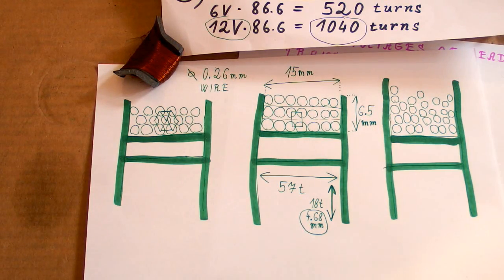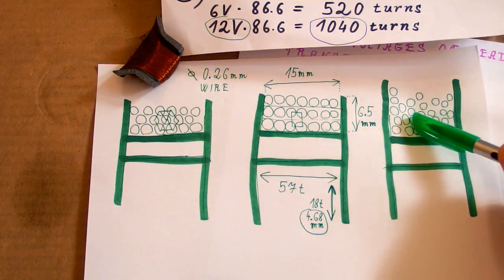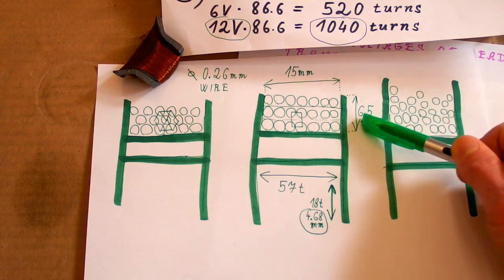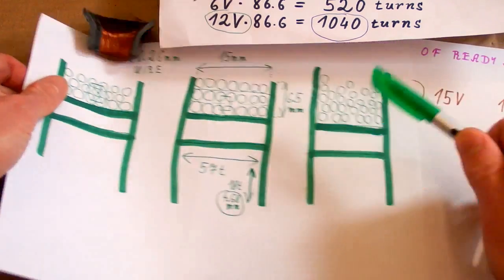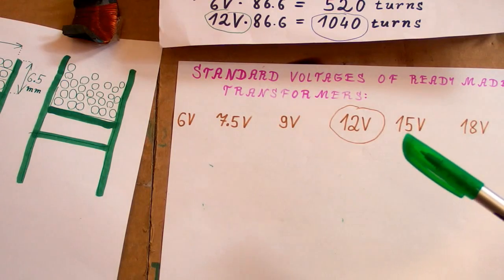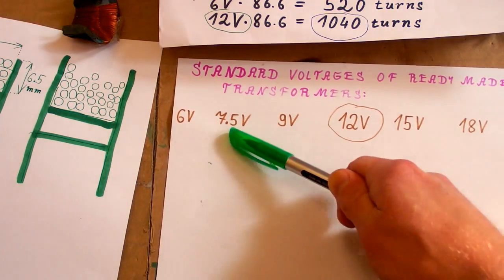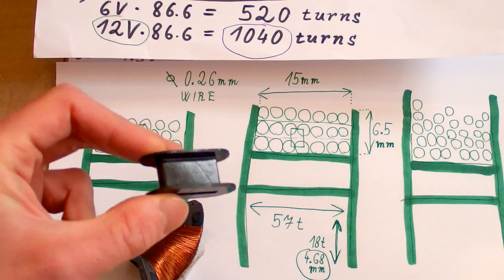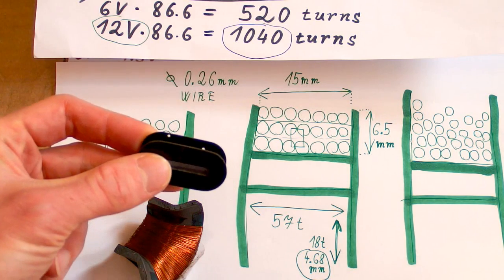Of course in reality the winding is going to be much more disorganized, but there's still a lot of headroom. And if it still doesn't fit, I can just put less turns on it and use a lower voltage. So now the hardest part, let's actually wind it.